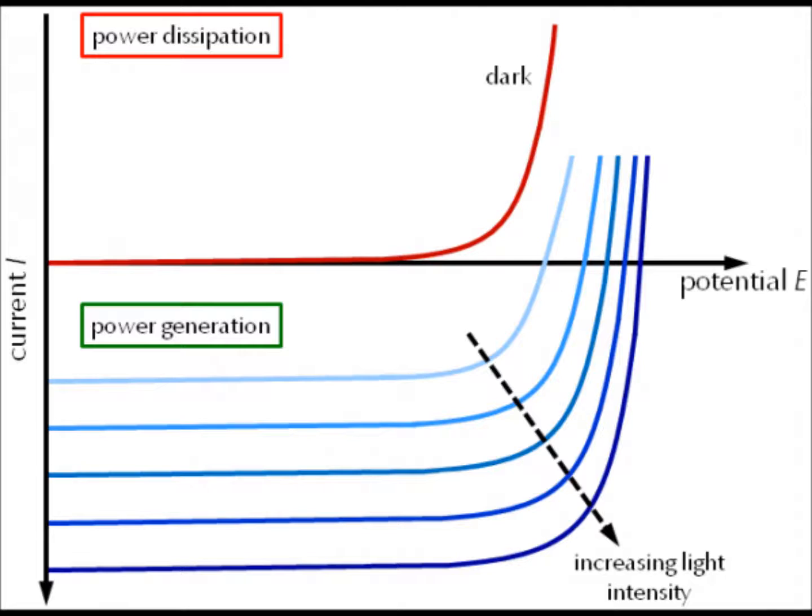Hi everyone, good evening. Today I'm going to show you how we measure a very simple solar cell, which is the IV measurement. When you have something like a dye-sensitized solar cell, it's very easy to find the open circuit voltage, short circuit current, fill factor, and hence you can know the efficiency.